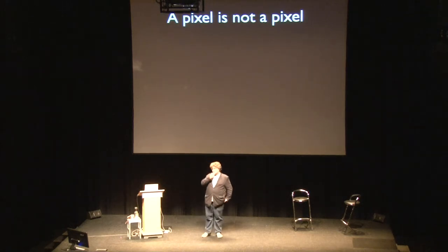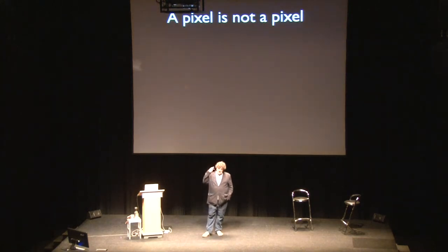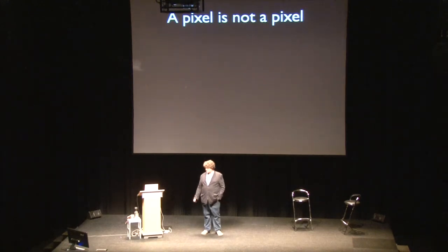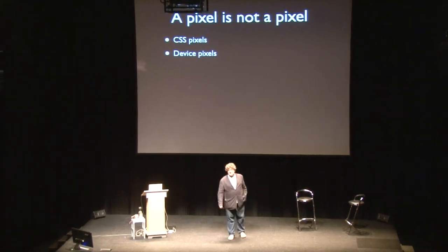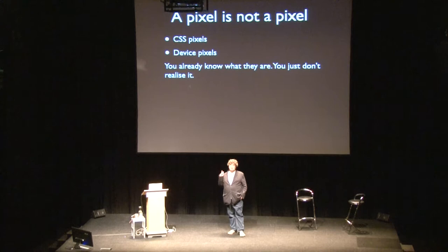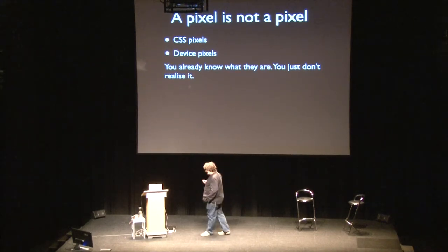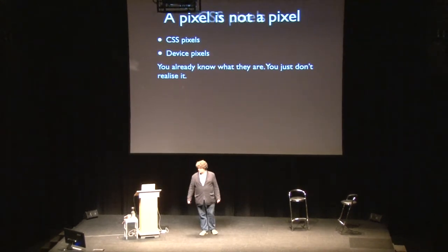Years ago I wrote an article: 'A pixel is not a pixel.' It's still one of the most popular articles on my site. It made people understand that there were two different kinds of pixels — namely CSS pixels and device pixels. This may sound totally complicated to you, but don't worry, you already know what they are. You just don't realize you know. Still, it's important to make that distinction here and now before we go into the viewports.